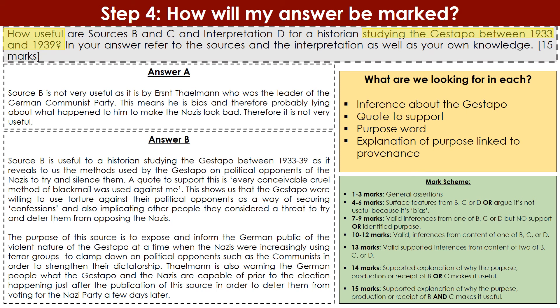Marks 7–9 is where you make a valid inference from one of B, C or D but don't offer any support — no quotes or evidence from the source. It's uncommon since most students naturally back up inferences, but that's where you land without quotes. Equally, if you just identify the purpose of source B or C without explaining it further or making any inferences, that's also 7–9 marks. Some students try to cheat the system by going straight to purpose: 'The purpose of source A is to expose...' full stop. You might get 7–9 marks but you won't get higher because you haven't made inferences or fully explained the purpose using the provenance.